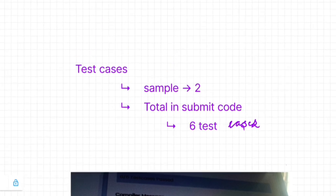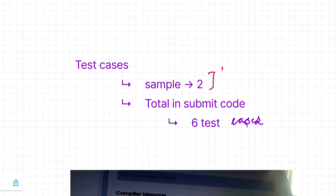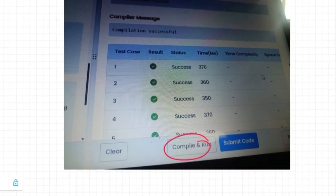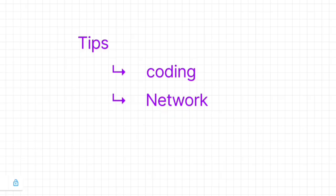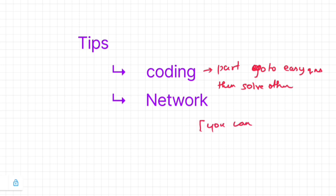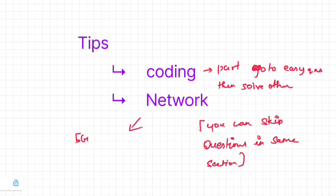For test cases, there are two sample test cases and a total of six test cases per question that you need to pass. When you run the code, compilation should succeed — compile and check your code, then click the submit button to submit. The most important tip for coding: first analyze which question is easy and complete that first, then move on to the harder questions.